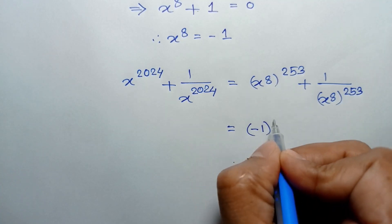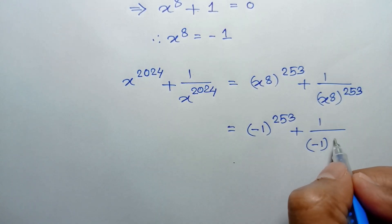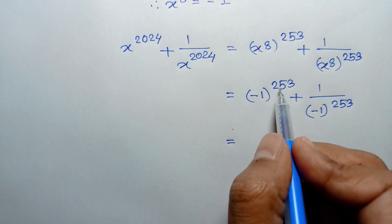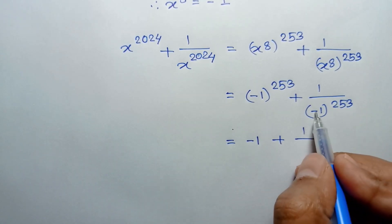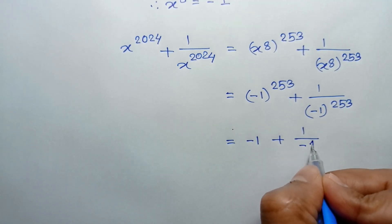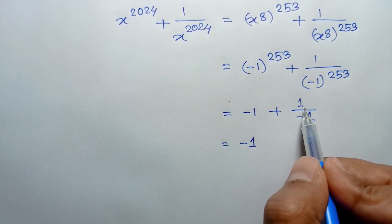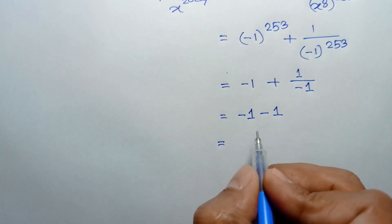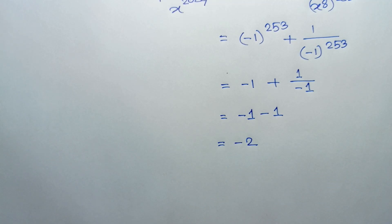We can write negative 1 to the power 253 plus 1 over negative 1 to the power 253. Since negative 1 to the power of an odd number is negative 1, this gives us negative 1 plus 1 over negative 1. Since 1 over negative 1 is negative 1, we get negative 1 minus 1, which equals negative 2. So this is the value of x to the power 2024 plus 1 over x to the power 2024.